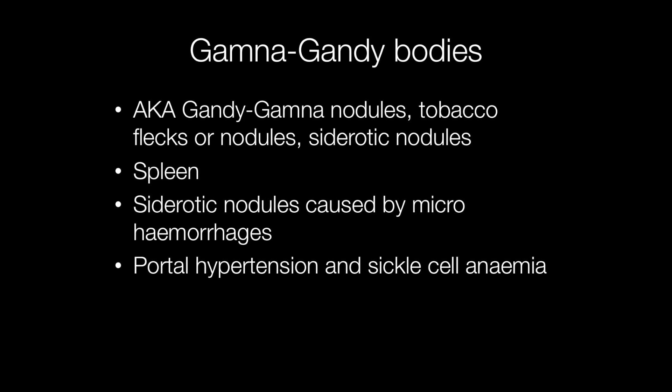Gamna-Gandhi bodies are benign siderotic nodules, also known as tobacco flecks or tobacco nodules. They occur in the spleen and are caused by micro-haemorrhages. The common causes are portal hypertension and sickle cell anaemia.